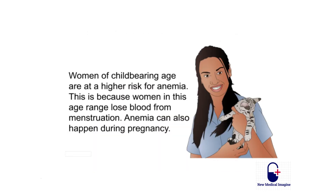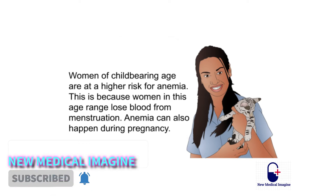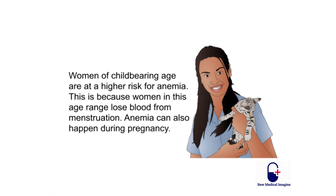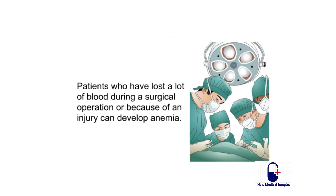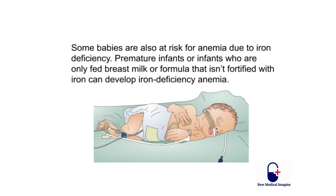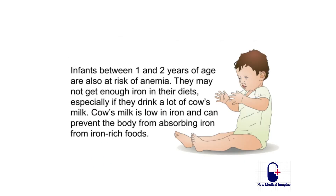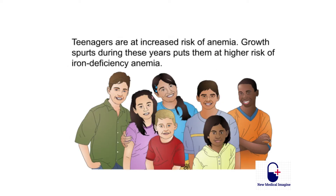Women of childbearing age are at higher risk for anemia because of blood loss from menstruation, and anemia can also happen during pregnancy. Patients who have lost a lot of blood during surgery or due to injury can develop anemia. Premature infants or infants fed only breast milk or formula not fortified with iron can develop iron deficiency anemia. Infants between one and two years of age are also at risk if they drink a lot of cow's milk, which is low in iron and can prevent iron absorption.